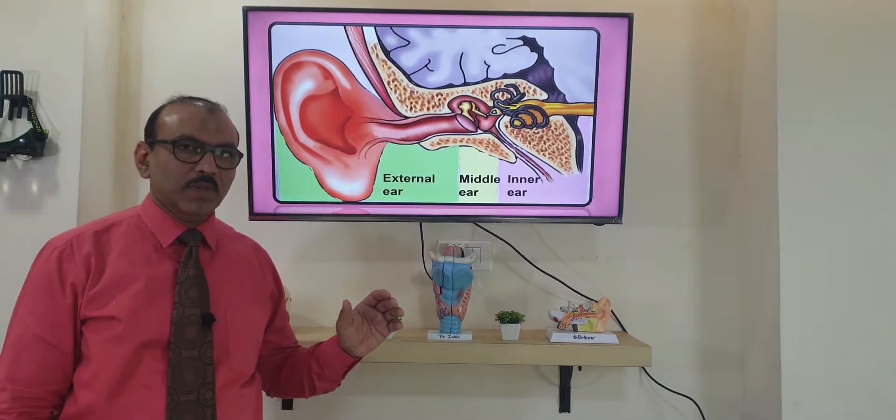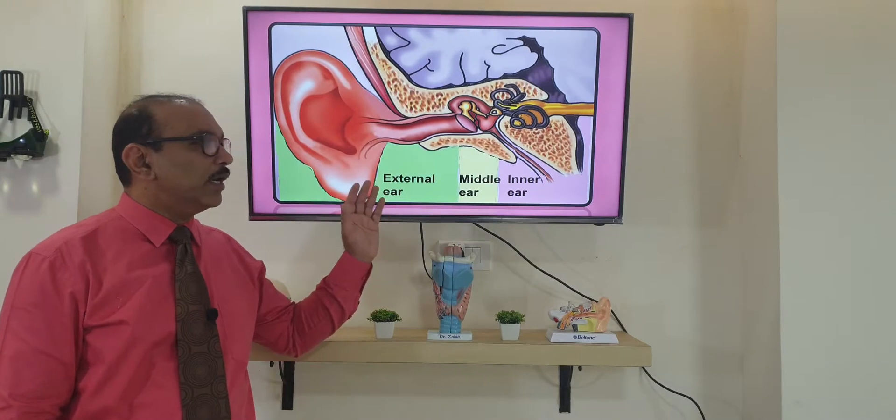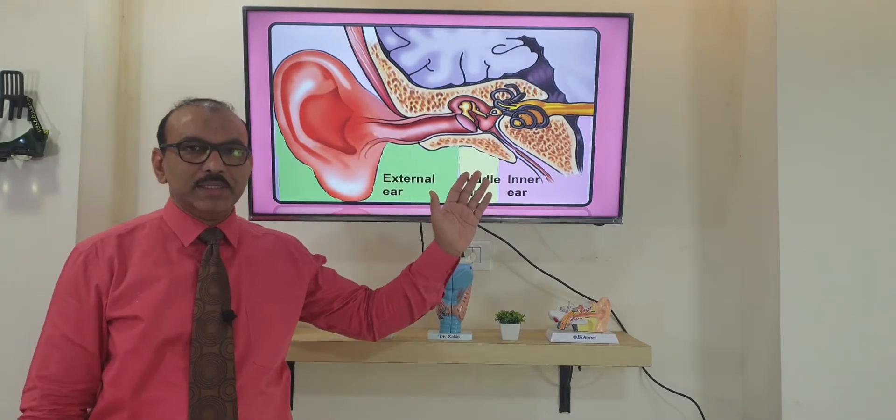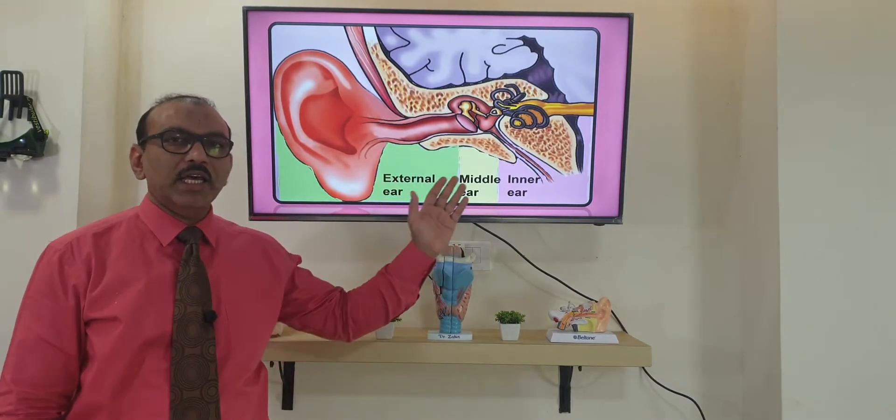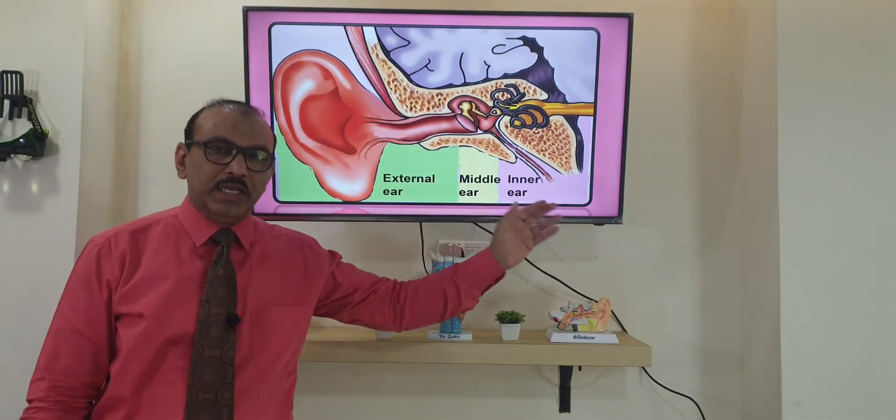Let us see the structure of the ear. The ear can be divided into three parts: external ear, middle ear, and inner ear.